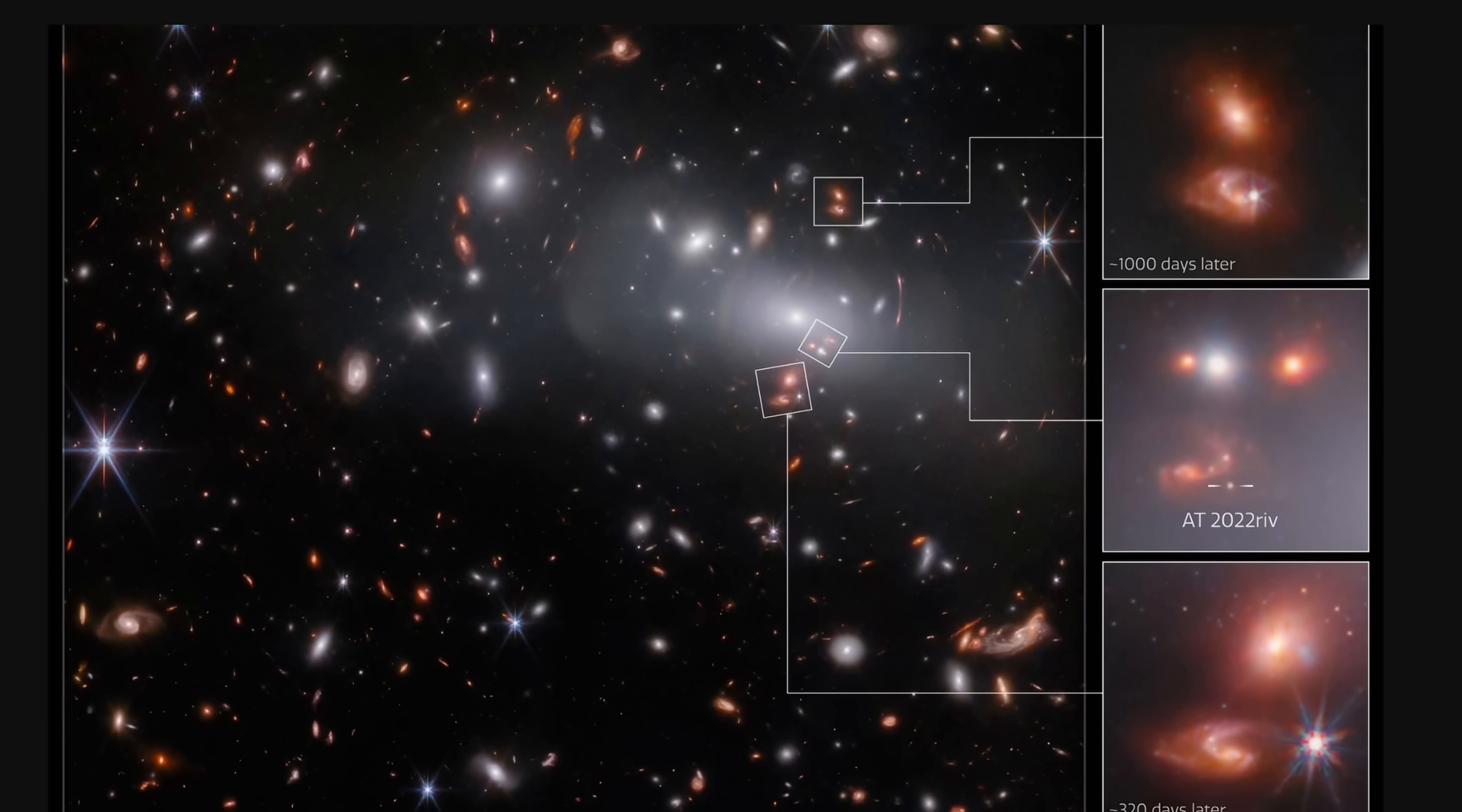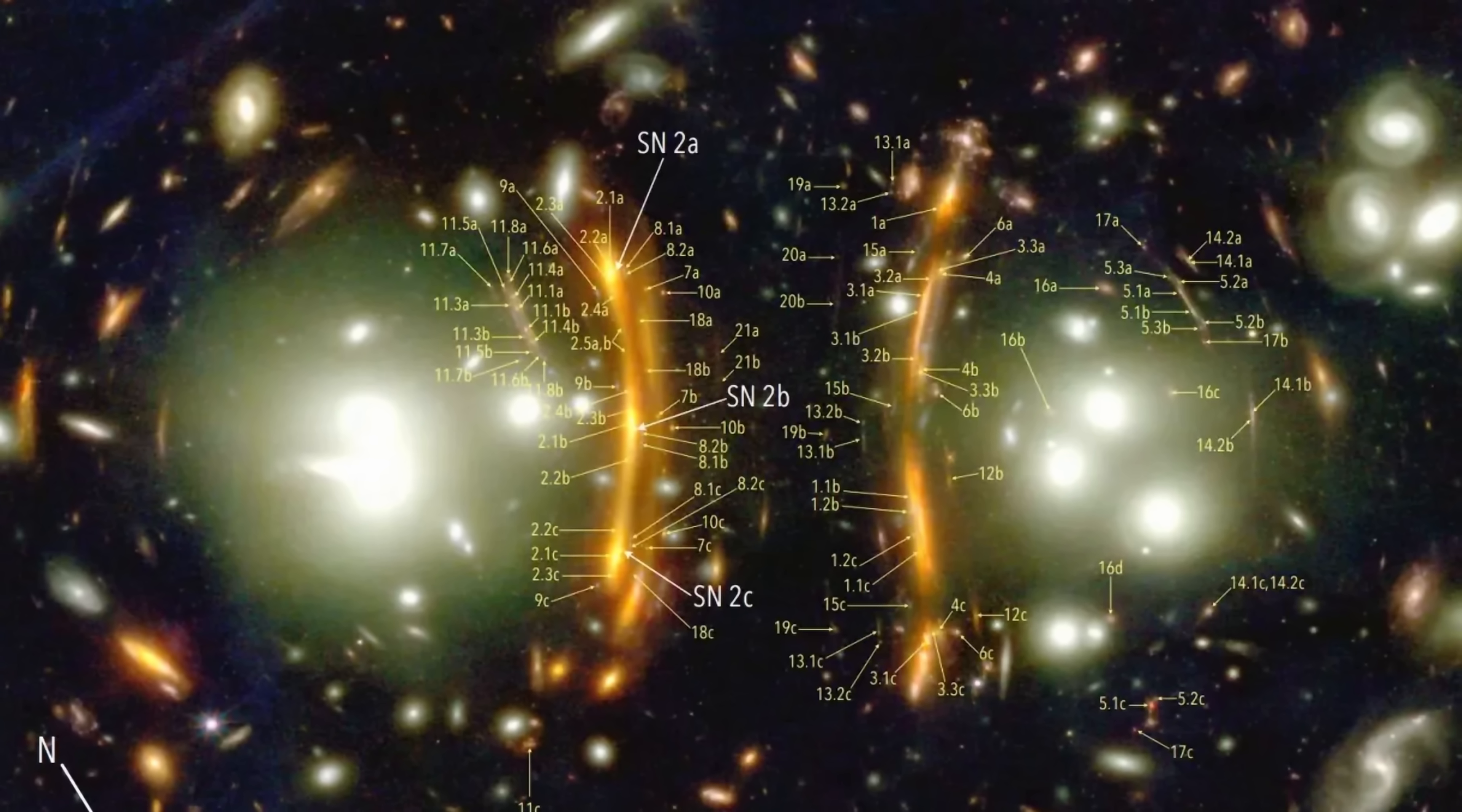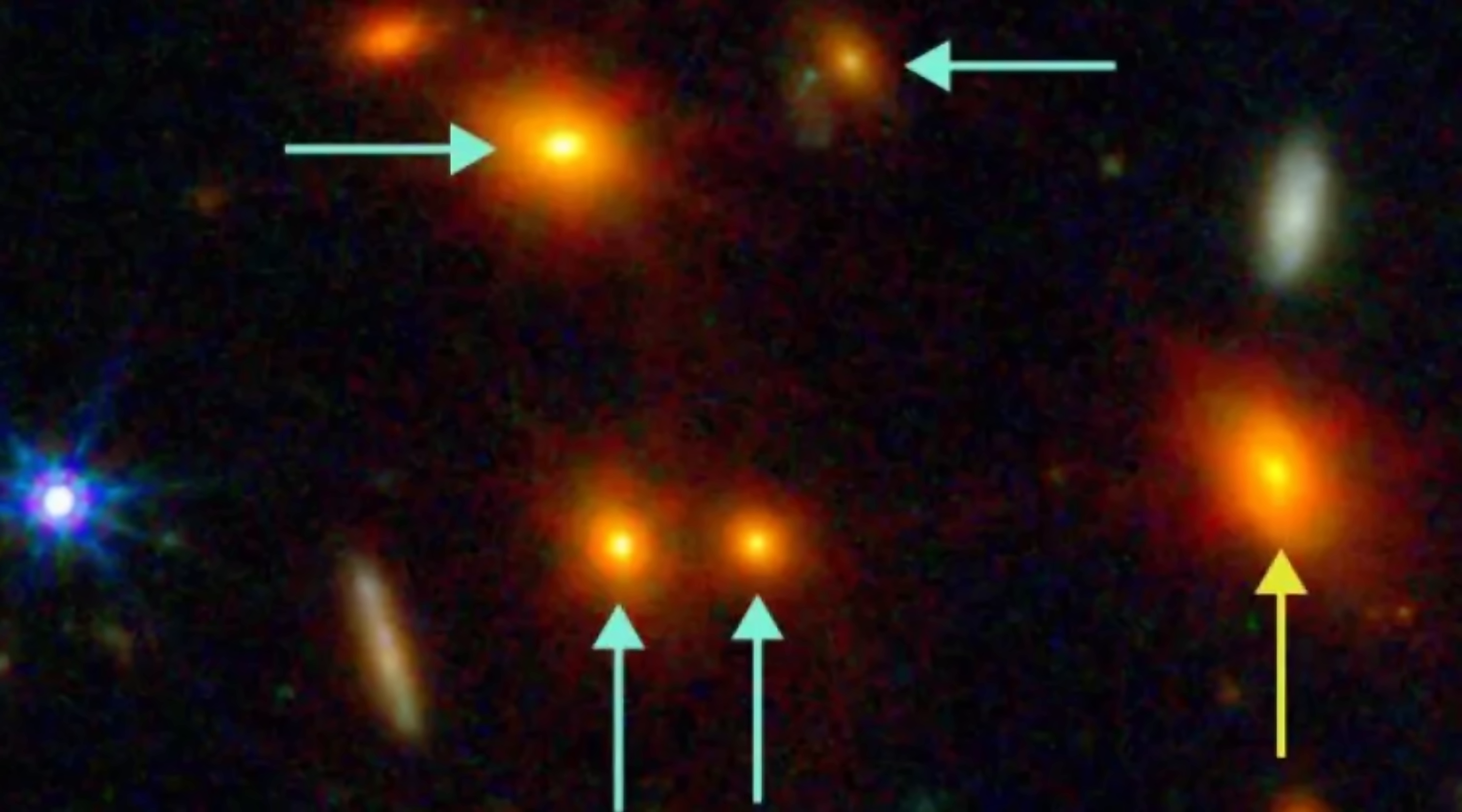But interestingly, approximately a month before this, in a completely different location produced by a different gravitational lens, in this case a galaxy cluster known as G165, researchers observed another triple supernova, in this case producing even stronger light, and thus technically providing us with even better data. And so here, by observing the supernova appear at different times, we're essentially getting a lot of confirmations for various cosmological theories,